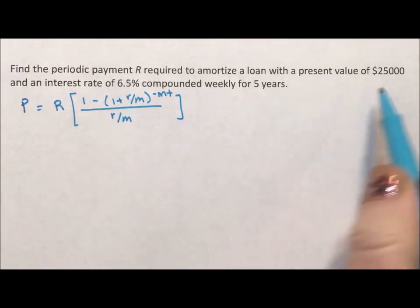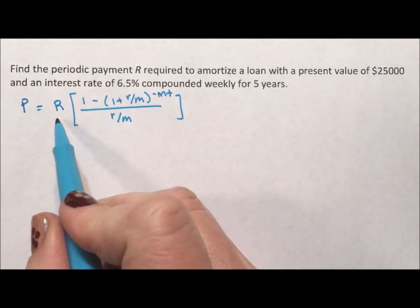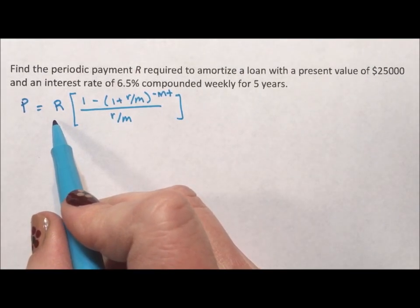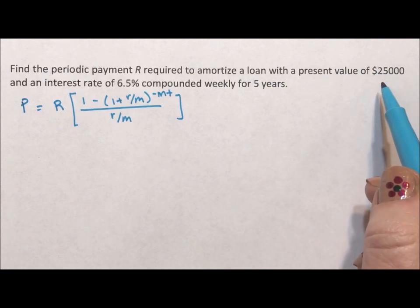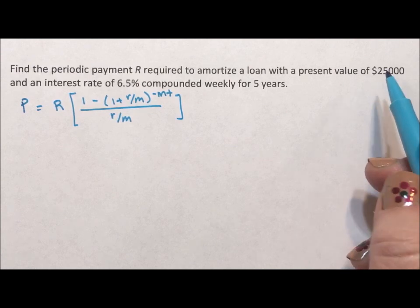Basically what happens is the present value is what the value of the loan is today. R are your payments. As you know, you're going to pay more than $25,000 for your loan. So this calculates the payments that you're going to pay, including the interest.